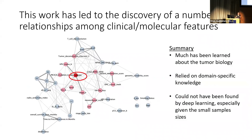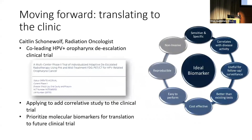All of this work together — along with other features we've pulled out — has led to the discovery of many different relationships among both clinical and molecular features. This is a network graph that my student Bailey Garb just finished a few days ago, so we're going to continue to work on it. Each node is some molecular feature we've extracted, and HPV subtype is in the middle in red. In summary, we've learned a lot about tumor biology by relying heavily on domain-specific knowledge — and not all of this could have been found by deep learning, especially with the small sample sizes we have. Moving forward, we hope to translate this to the clinic through a new collaboration with a radiation oncologist co-leading an HPV-positive oropharynx de-escalation clinical trial.